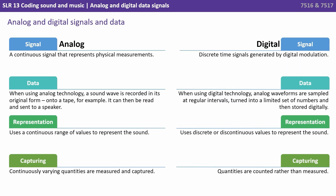When we compare the two we can see some differences. When we refer to analogue, the signal is a continuous signal that represents physical measurements. In digital data, the signal is discrete time signals generated by digital modulation. With analogue, a sound wave was recorded in its original form onto a tape, for example, and it can then be read and sent to a speaker.